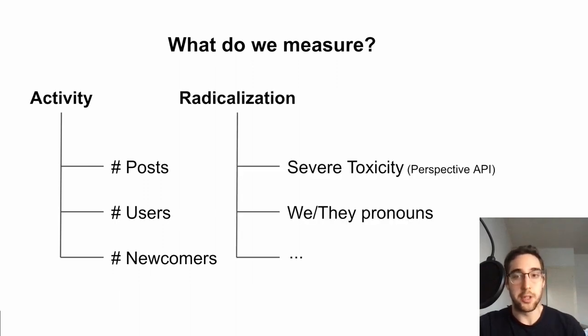And to measure radicalization, we look at text-derived signals that would indicate radicalization in these communities. For this presentation, we focus on a subset of the signals that we look at in the paper, and they are machine learning-derived toxicity scores (we use the Perspective API), and first- and third-person plural pronouns, whose increase has been linked with radicalization in previous work.